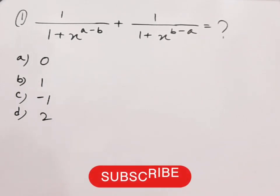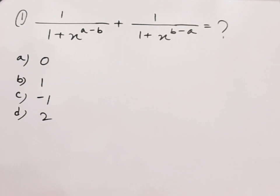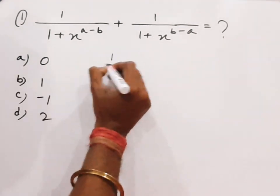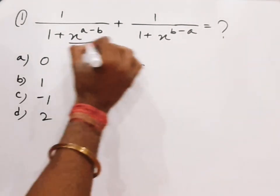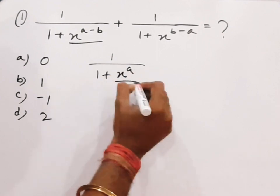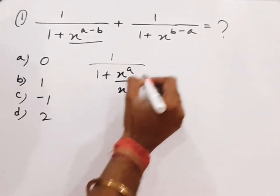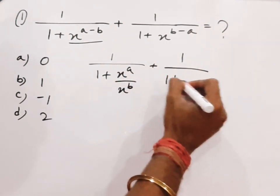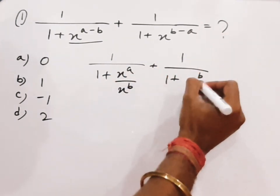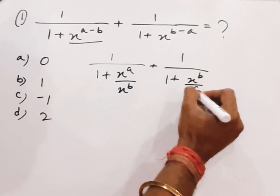The question is: 1 divided by (1 + x to the power a minus b) plus 1 divided by (1 + x to the power b minus a) equals question mark. So 1 by (1 + x^(a-b)) means x^a by x^b, plus 1 by (1 + x^b by x^a).